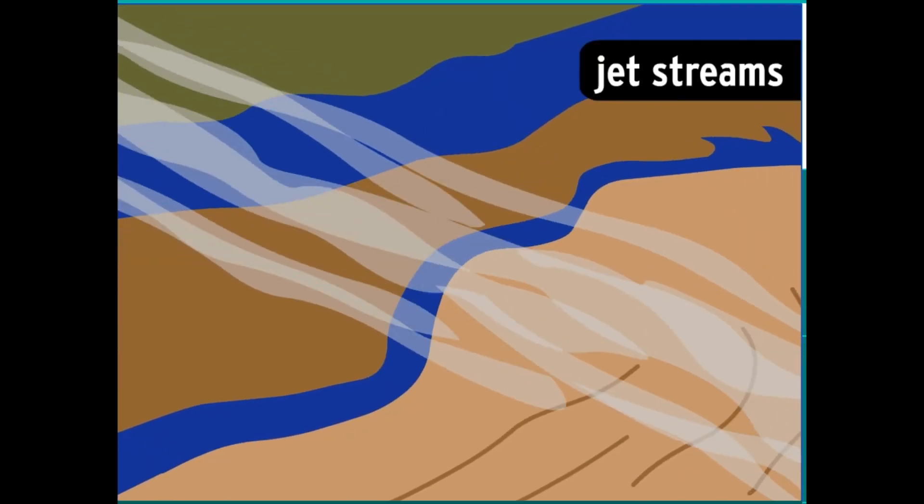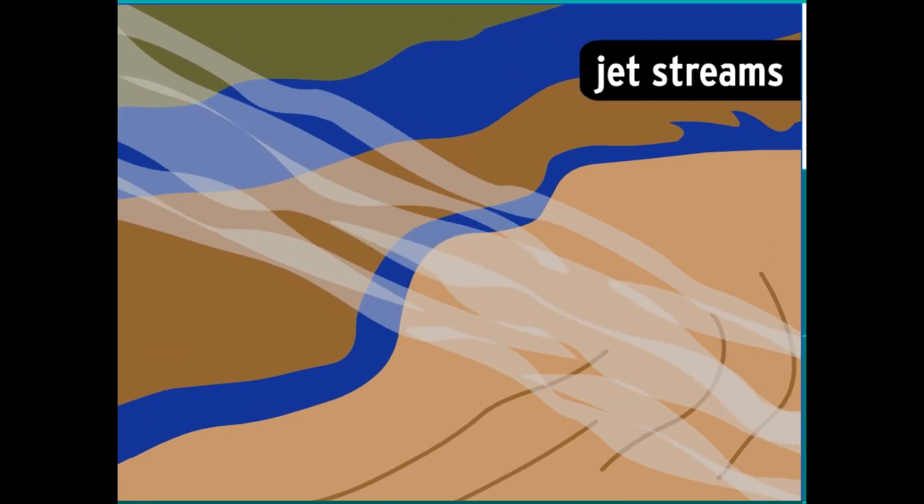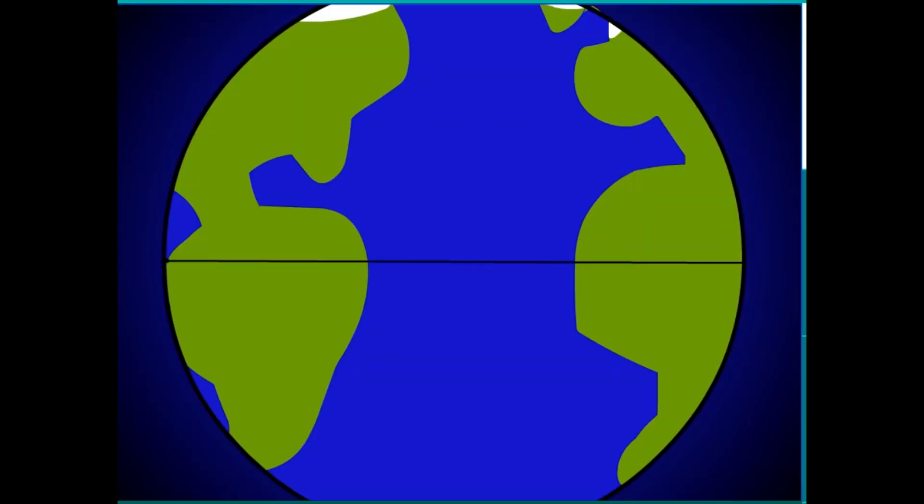Jet streams are strong winds that blow about 10 kilometers above ground. They blow in circles with one jet stream over each hemisphere, and they blow fast, up to 200 kilometers per hour.